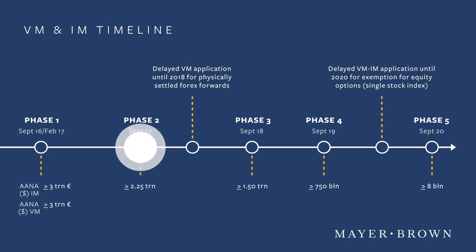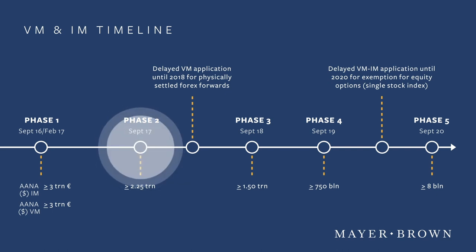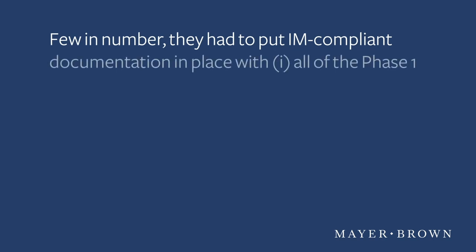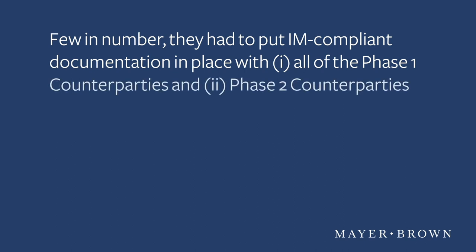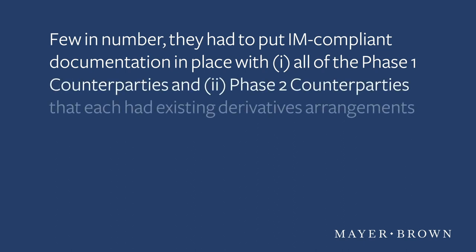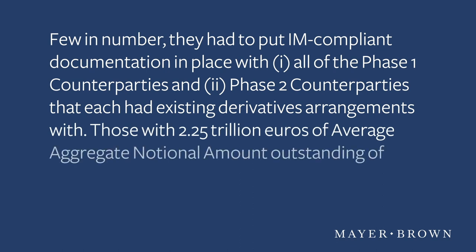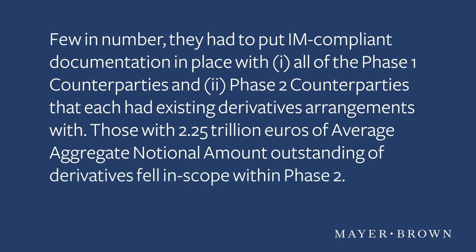The phase two counterparties came into scope in September 2017. Few in number, they had to put IM-compliant documentation in place with firstly all of the phase one counterparties, and secondly with the phase two counterparties that each had existing derivatives arrangements with them. Those with 2.25 trillion euros average aggregate notional amount outstanding of derivatives fell in scope within phase two.